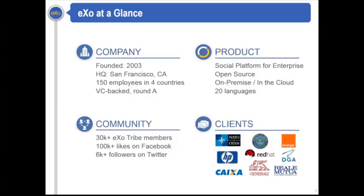So who is EXO Platform? EXO Platform is an open-source software editor company founded in 2003. We have headquarters in San Francisco in the United States, but with strong roots in France. We offer an enterprise-based social collaboration platform, which comes with a strong portal foundation and social collaboration features.